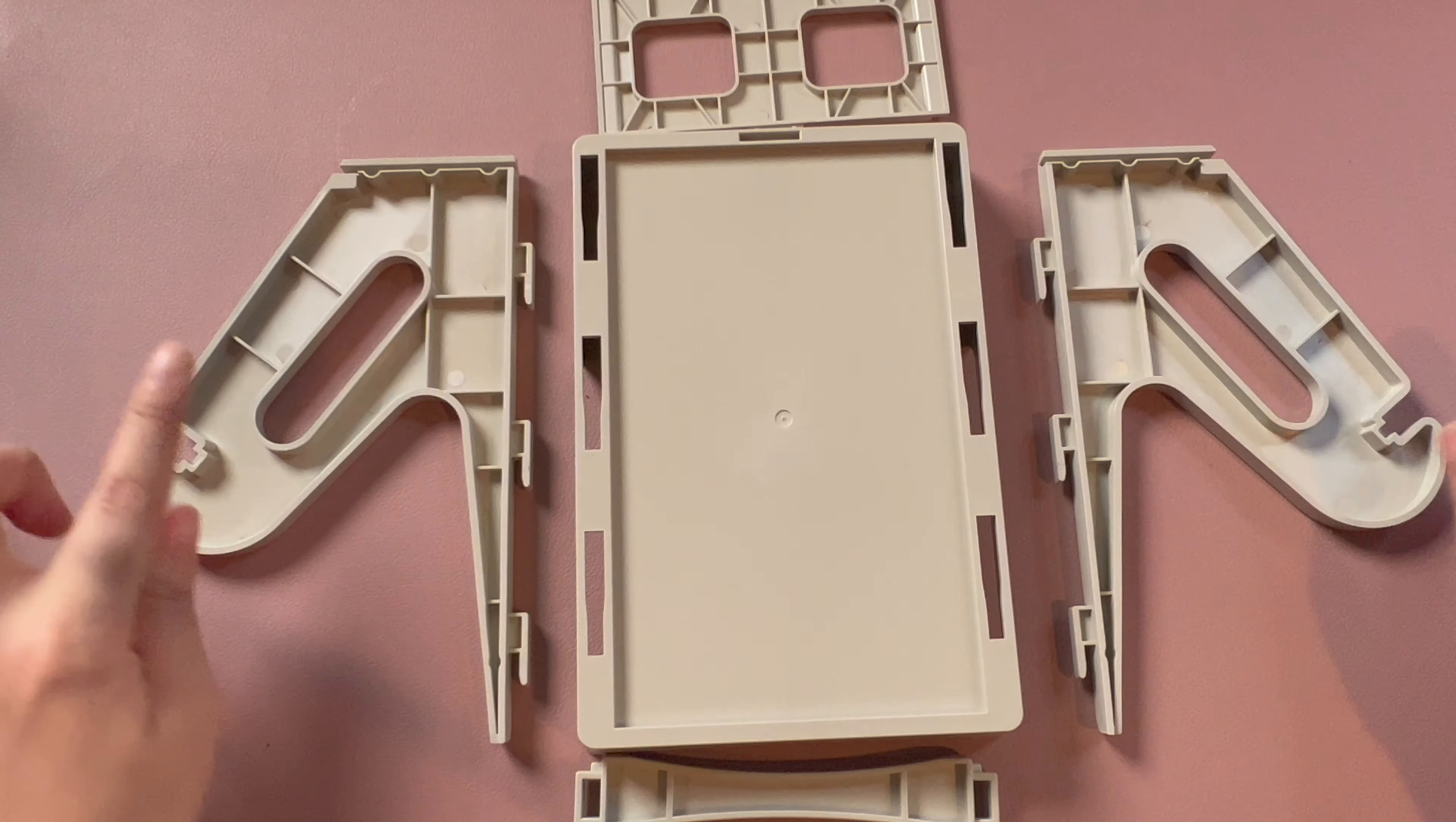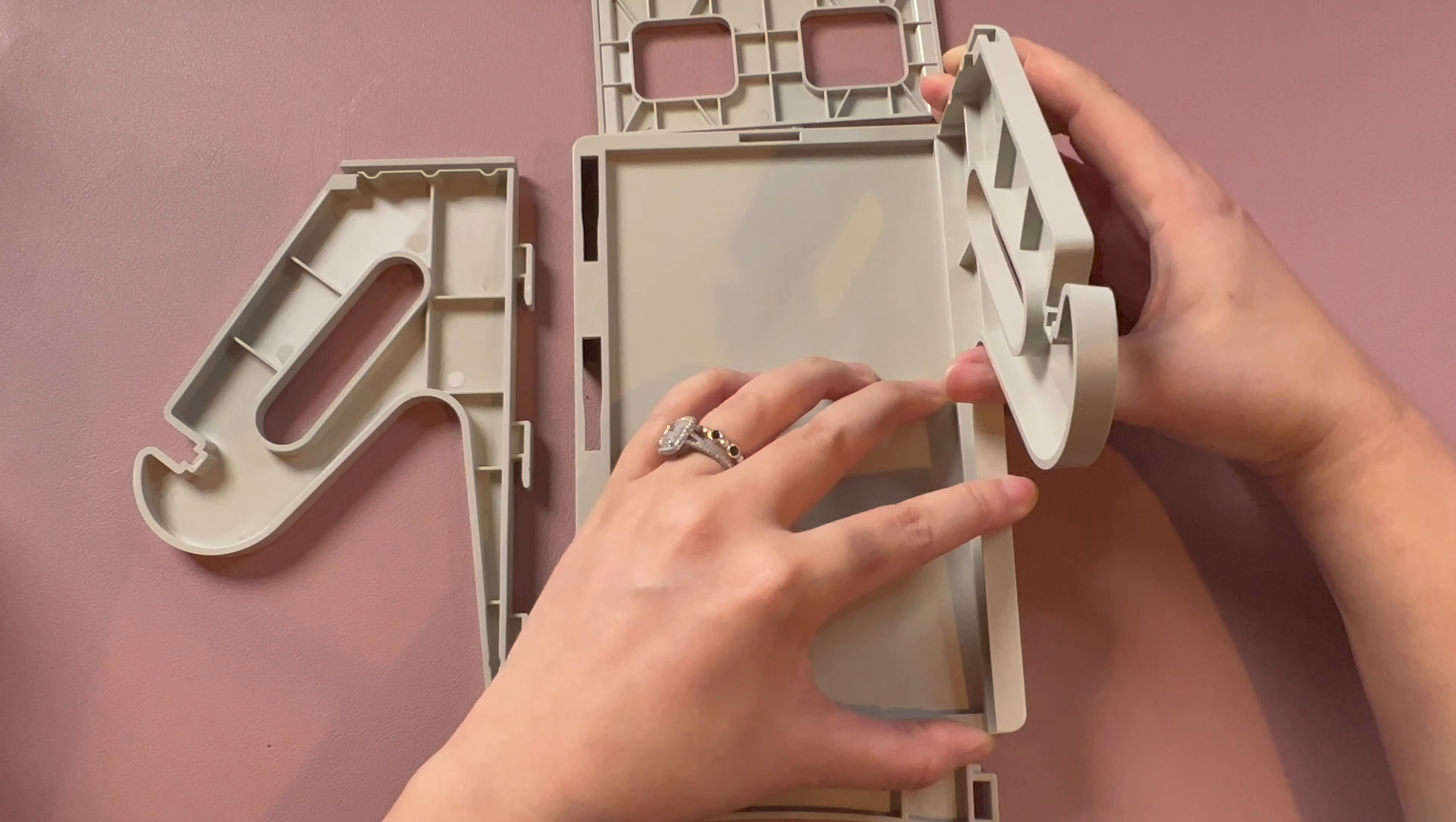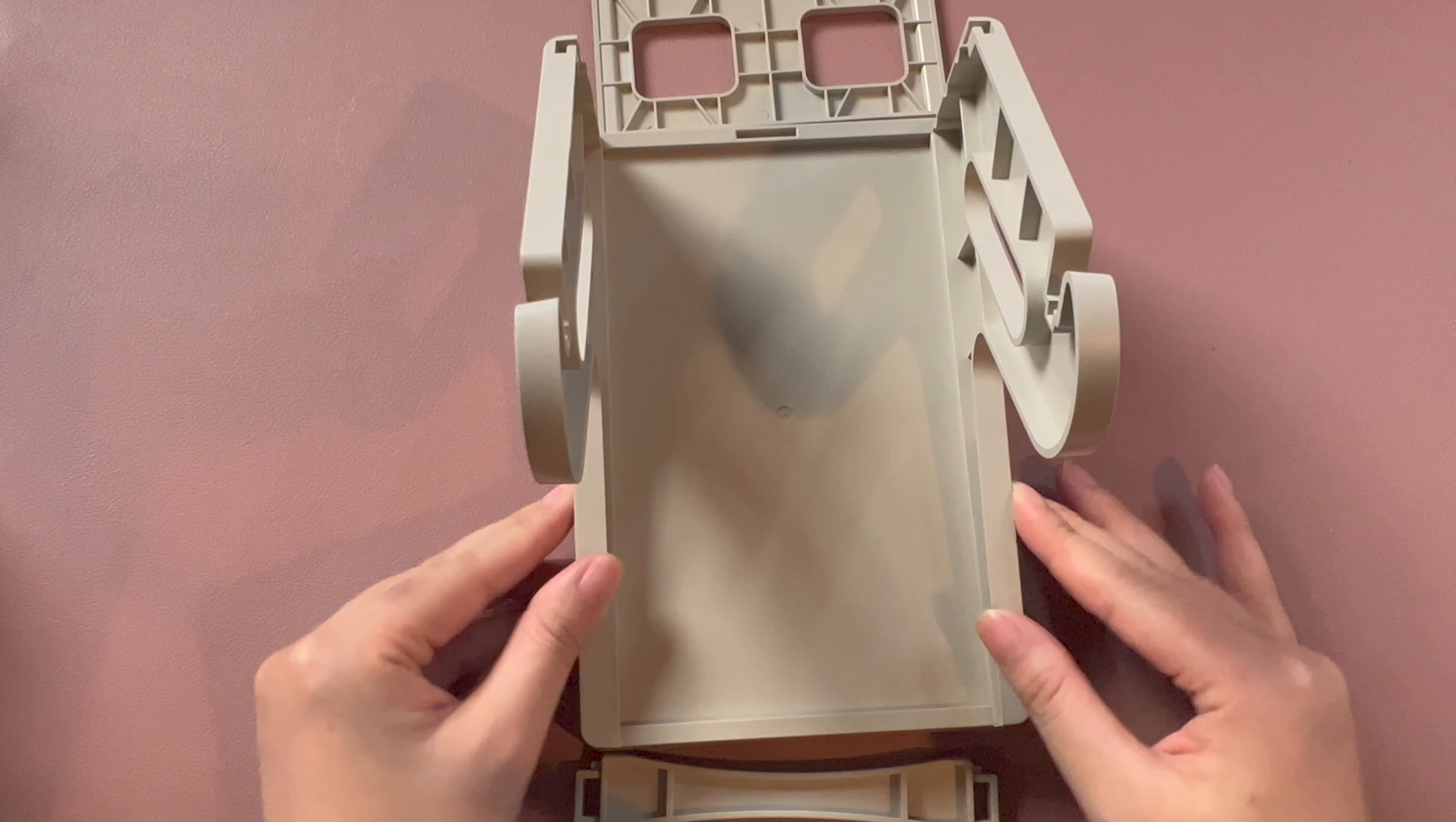So then you're going to take these pieces from the side and you're going to see there's an area in the back here where it's wider and then more narrow. So you're going to take it from the back and then push it forward so it locks into place. You're going to start with both of these side pieces and then go ahead and slide it into place. Now these guys are pretty secure.